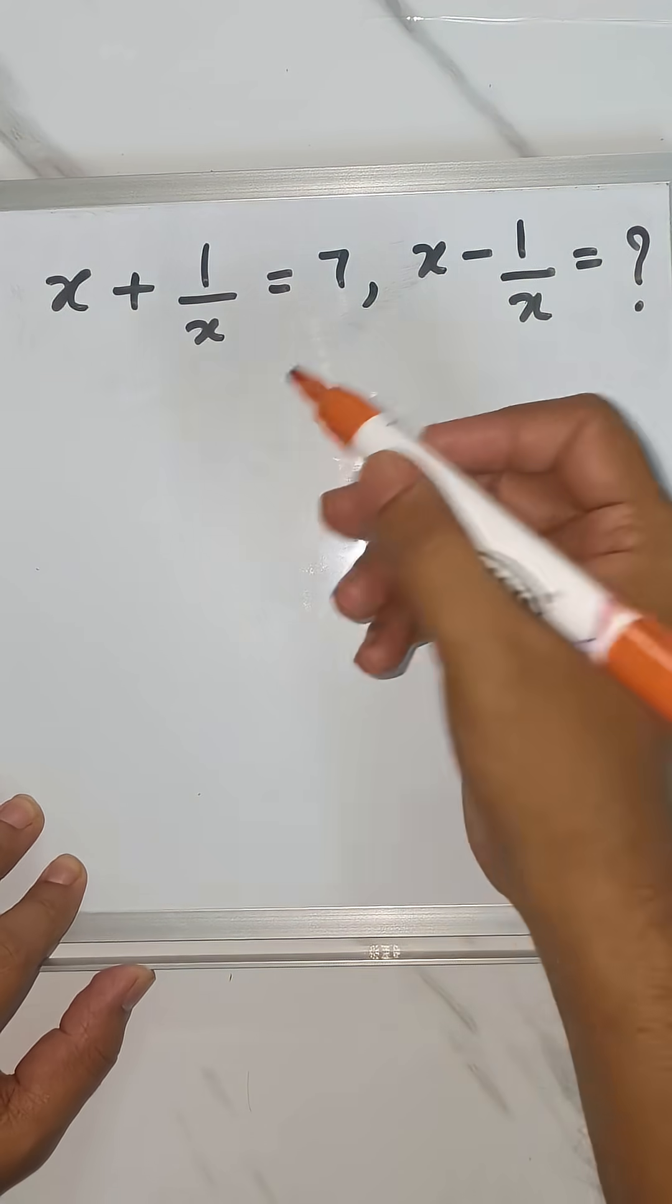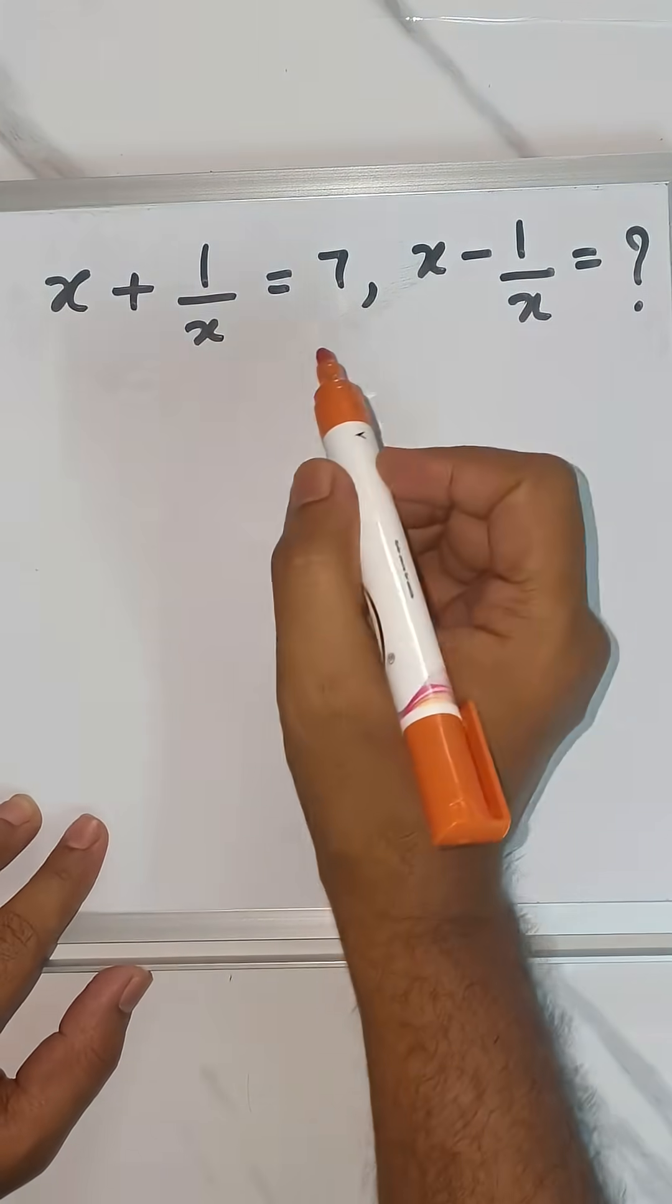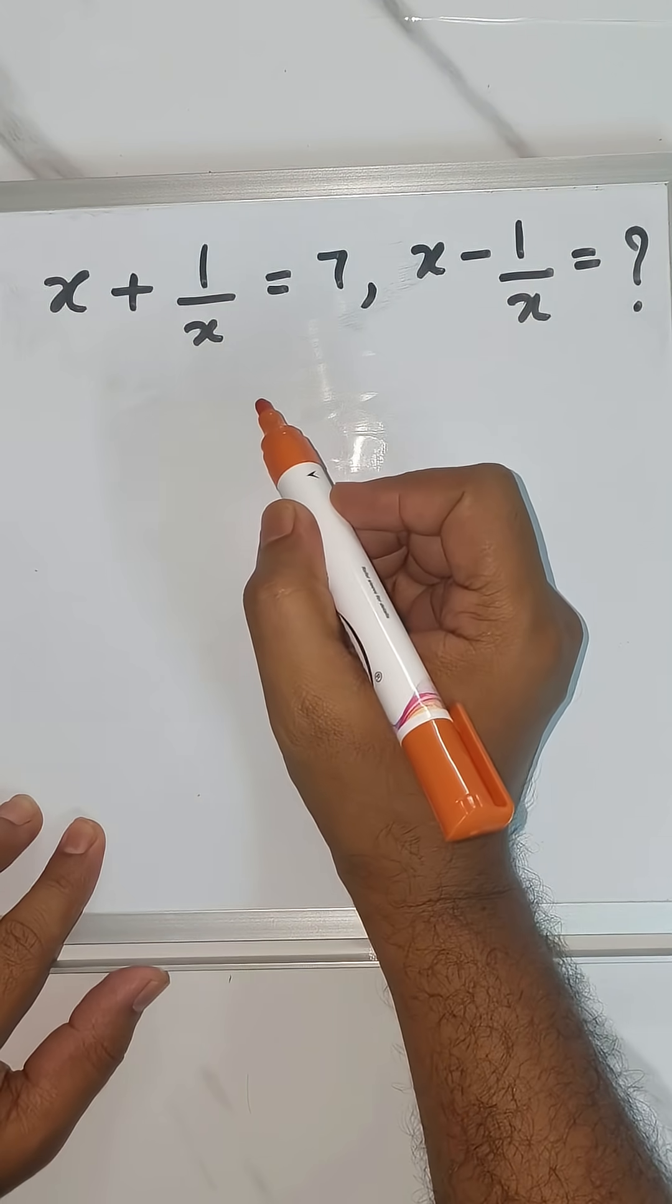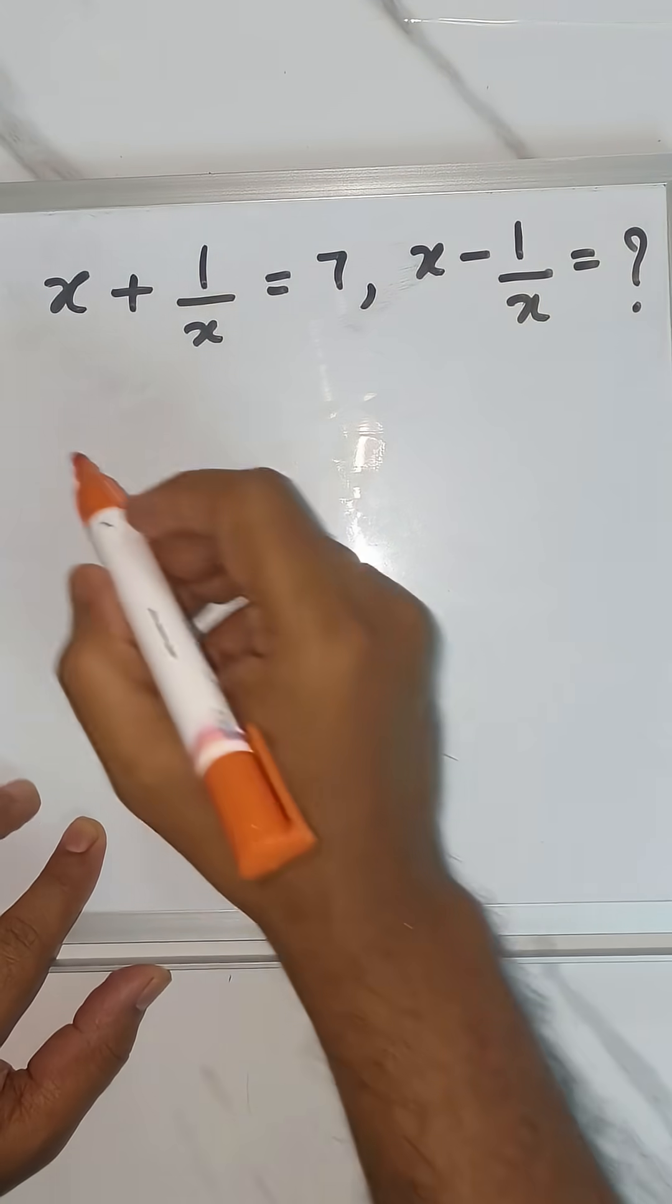Hi, if x plus 1/x is 7, then what is x minus 1/x? So if you know a plus b whole square and a minus b whole square, you would be able to solve it very easily.